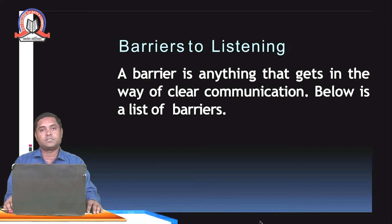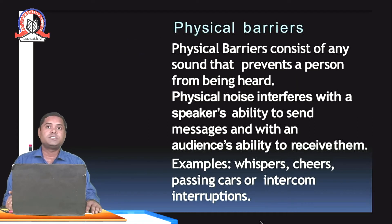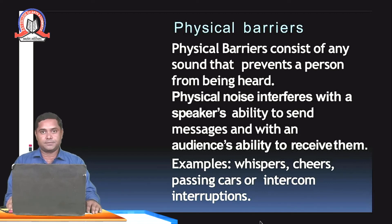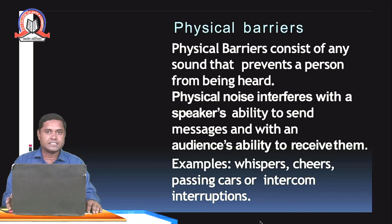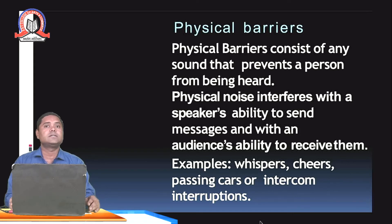After understanding different types of listening, let's look at barriers to listening. A barrier is anything that gets in the way of clear communication. Certain barriers occur when we try to listen to content. The first barrier is the physical barrier — physical barriers consist of any sound that prevents a person from being heard. Physical noise interferes with a speaker's ability to send messages and with an audience's ability to receive them, such as whispers, cheers, passing cars, or intercom interruptions.